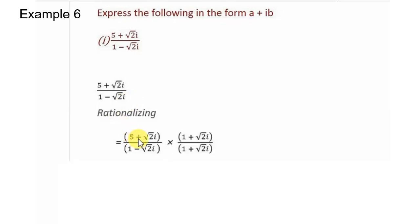How do we rationalize? (5 plus root 2i) divided by (1 minus root 2i) times (1 plus root 2i) divided by (1 plus root 2i). We multiply and divide by the same terms, the conjugate of the denominator.